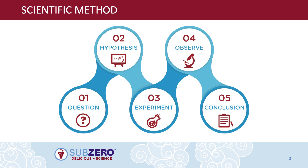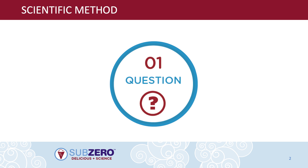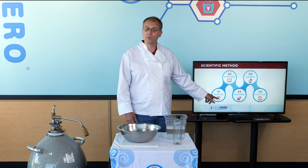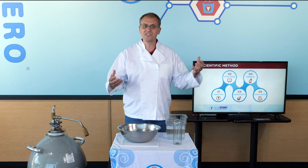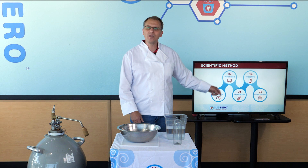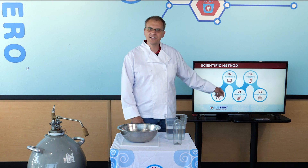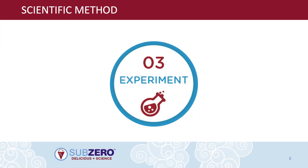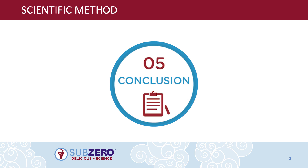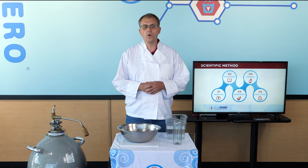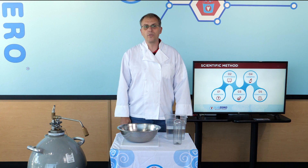The scientific method starts with number one: asking a question — what question do we want to answer? After that, we determine the hypothesis, which is just a fancy word for guess. We try and guess what we think is going to happen. Then we design an experiment. Once we've run our experiment, we observe the results to see what happened. And once we know what happened, we come up with a conclusion, which tells us if our hypothesis was right or wrong and gives us the answer to our problem.